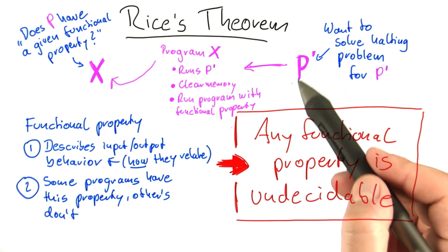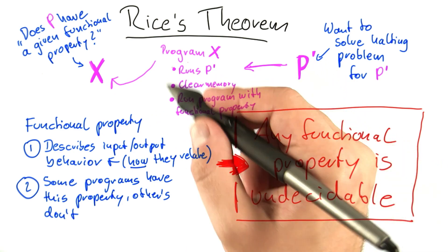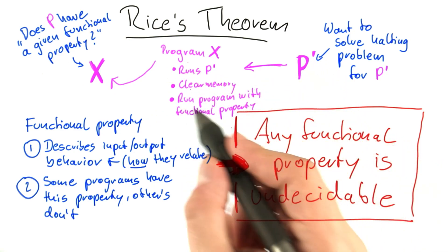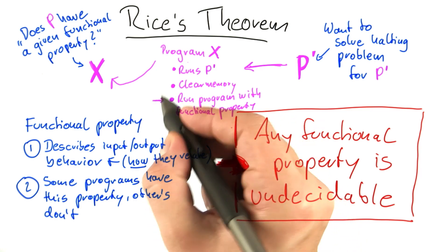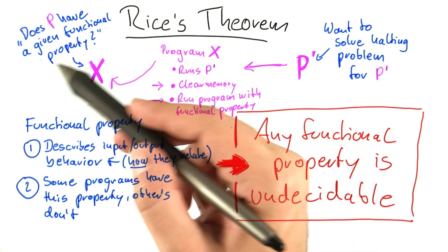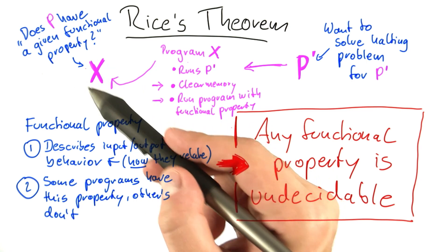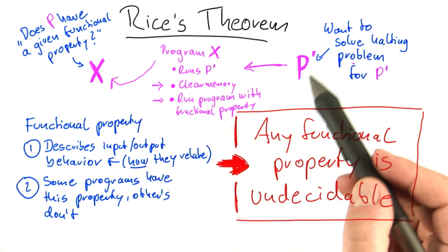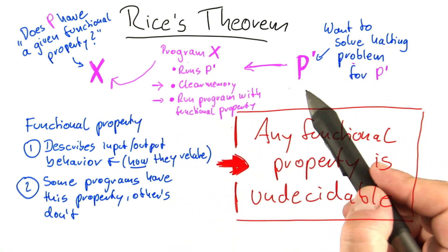If, on the other hand, p prime goes into an infinite loop, then the program does not have the functional property, because it will never be able to reach these two lines here. So deciding the functional property for this new program x here is the same as solving the halting problem for the original program that we started out with.